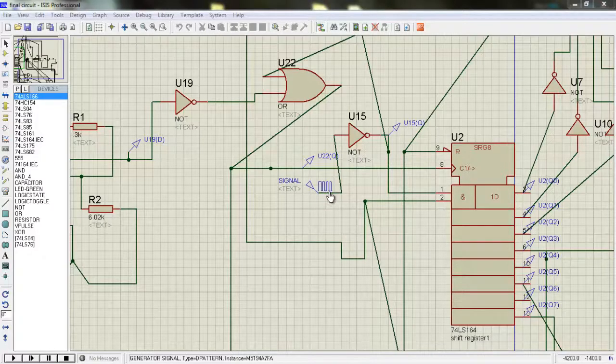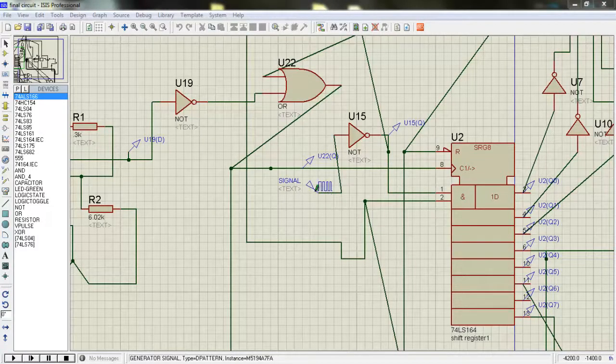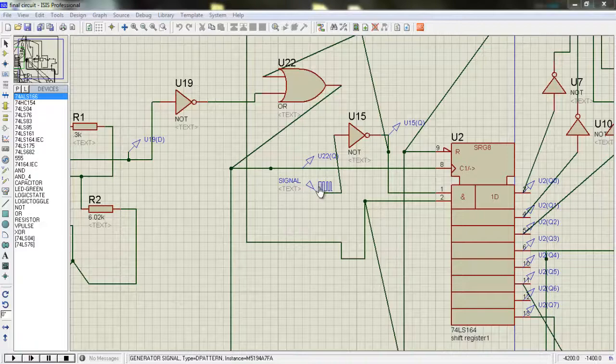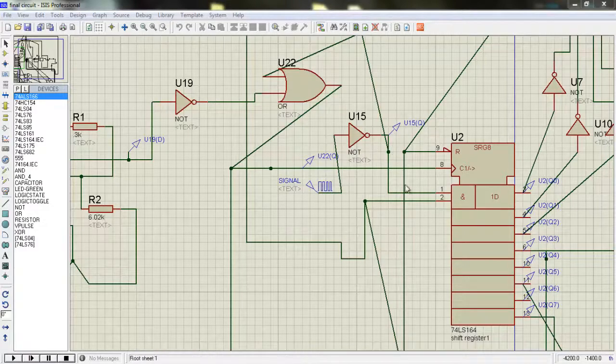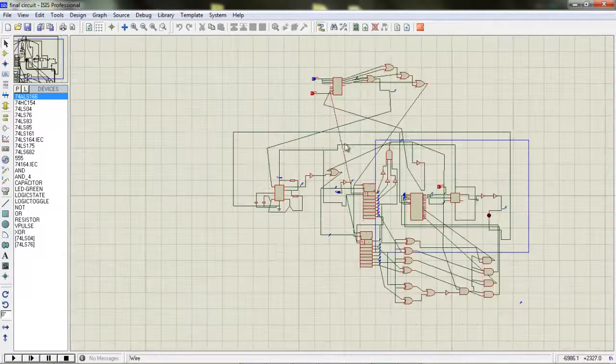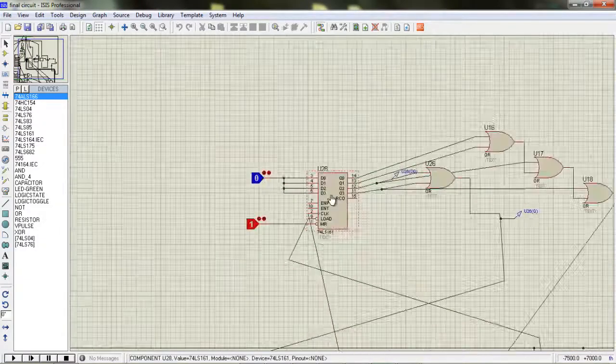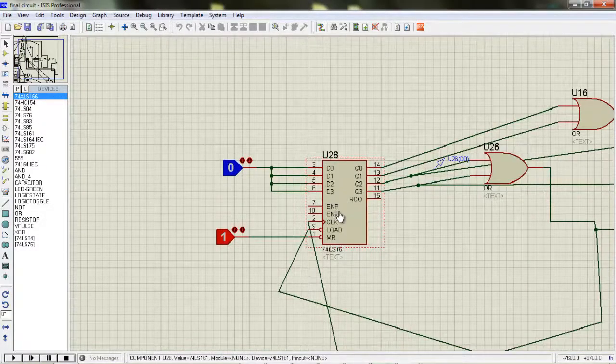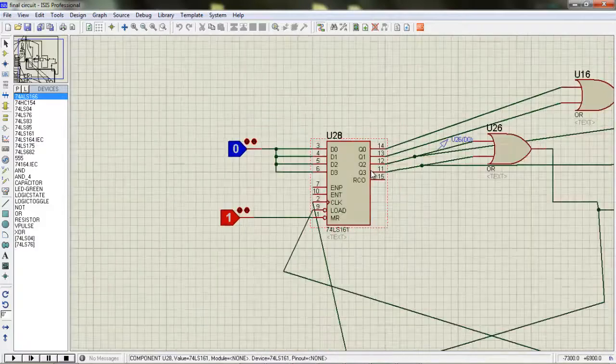Now let's see how our project works. Our IR receiver gives us the signal. It passes through an inverter and goes to the shift register. At the same time, it works as a clock in our 4-bit counter and starts it counting.